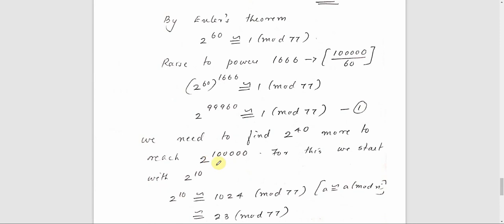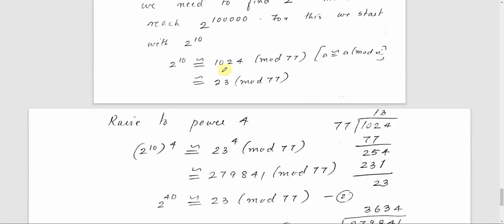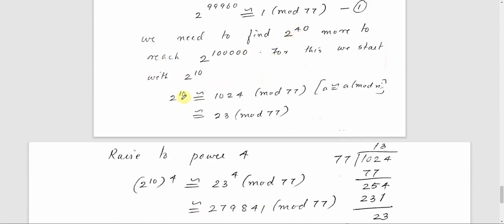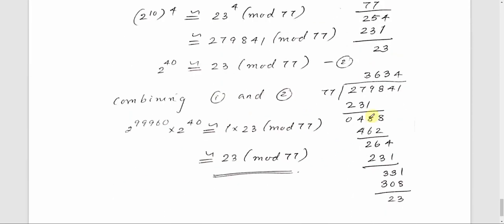We start with a lower power of 2: 2 raised to 10 equals 1024. 1024 divided by 77 gives quotient 13 and remainder 23. So 2 raised to 10 is congruent to 23 mod 77. Then 2 raised to 40 equals (2 raised to 10) raised to 4, which is congruent to 23 raised to 4 mod 77. Computing 23 raised to 4 gives 279841. Dividing 279841 by 77 gives quotient 3634 and remainder 23. So 2 raised to 40 is congruent to 23 mod 77.